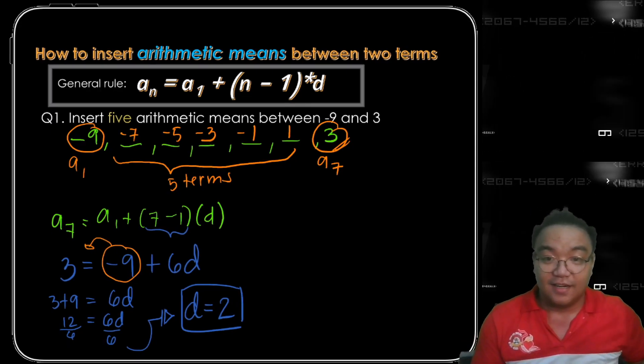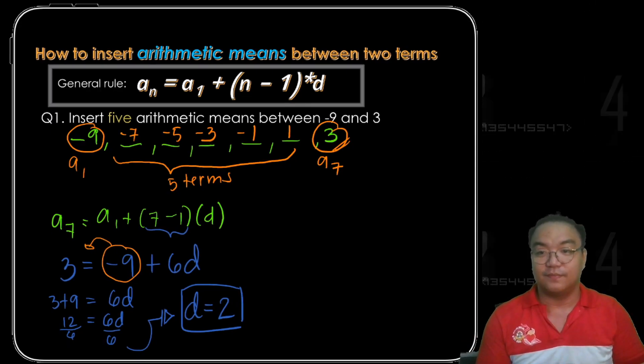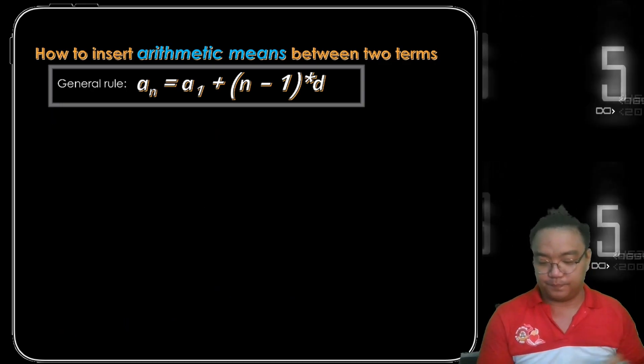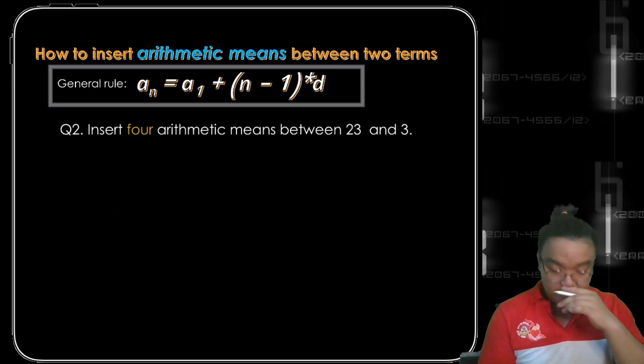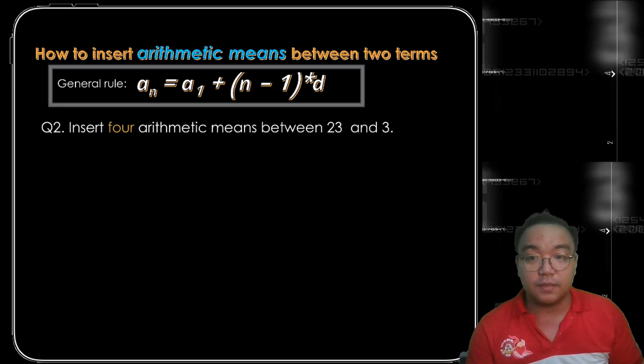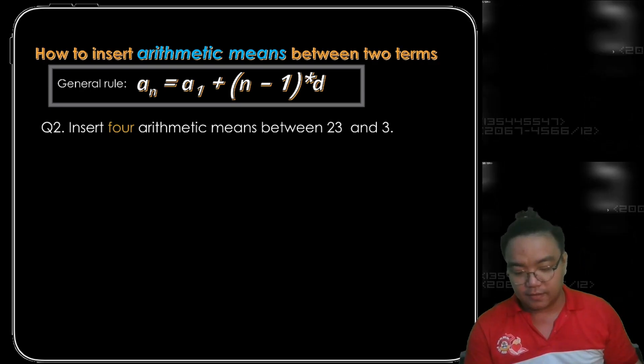Let's have another example. Question number 2: insert 4 arithmetic means between 23 and 3.